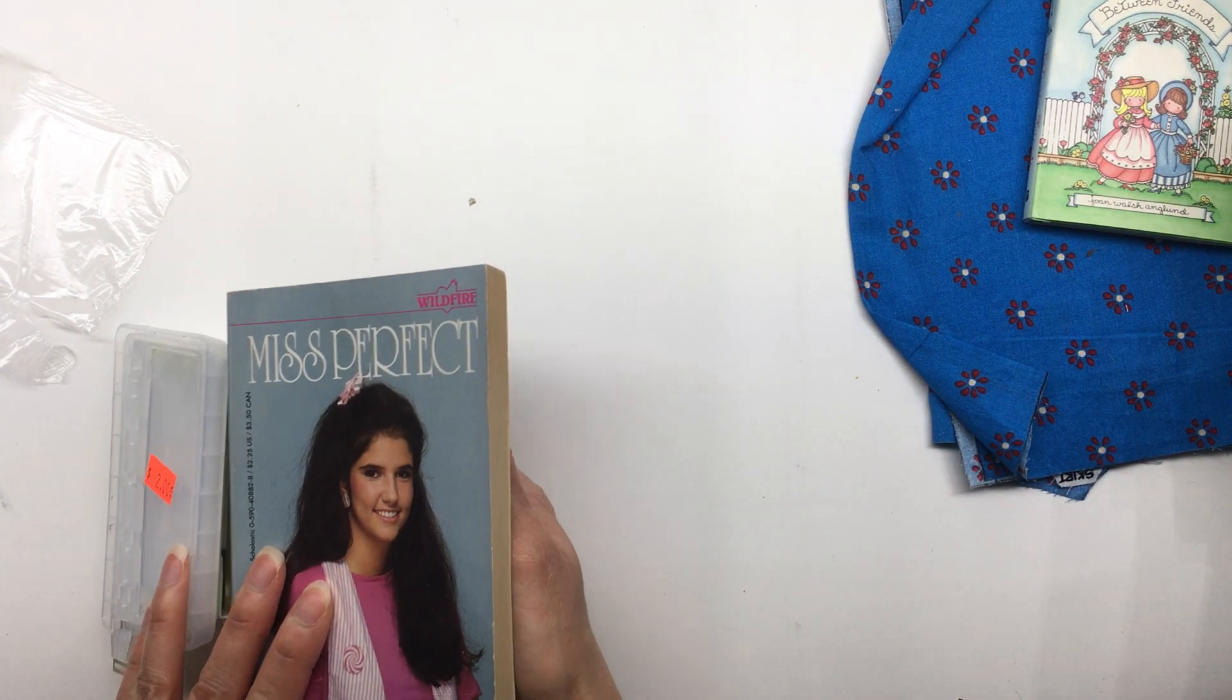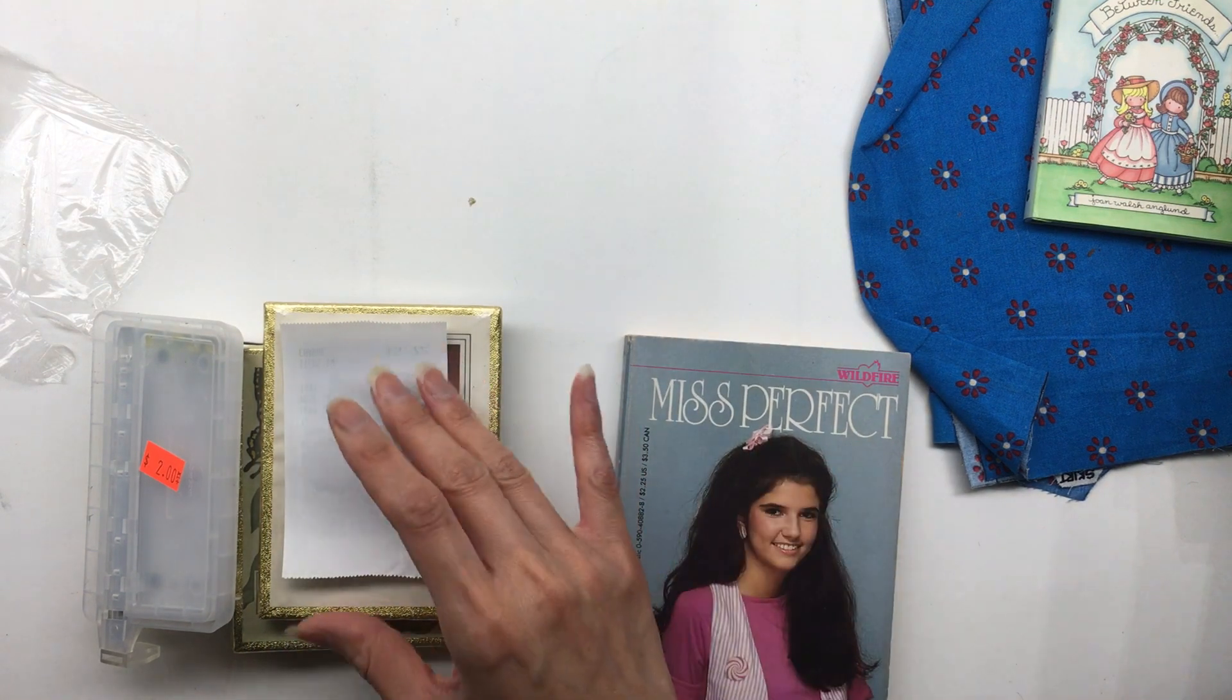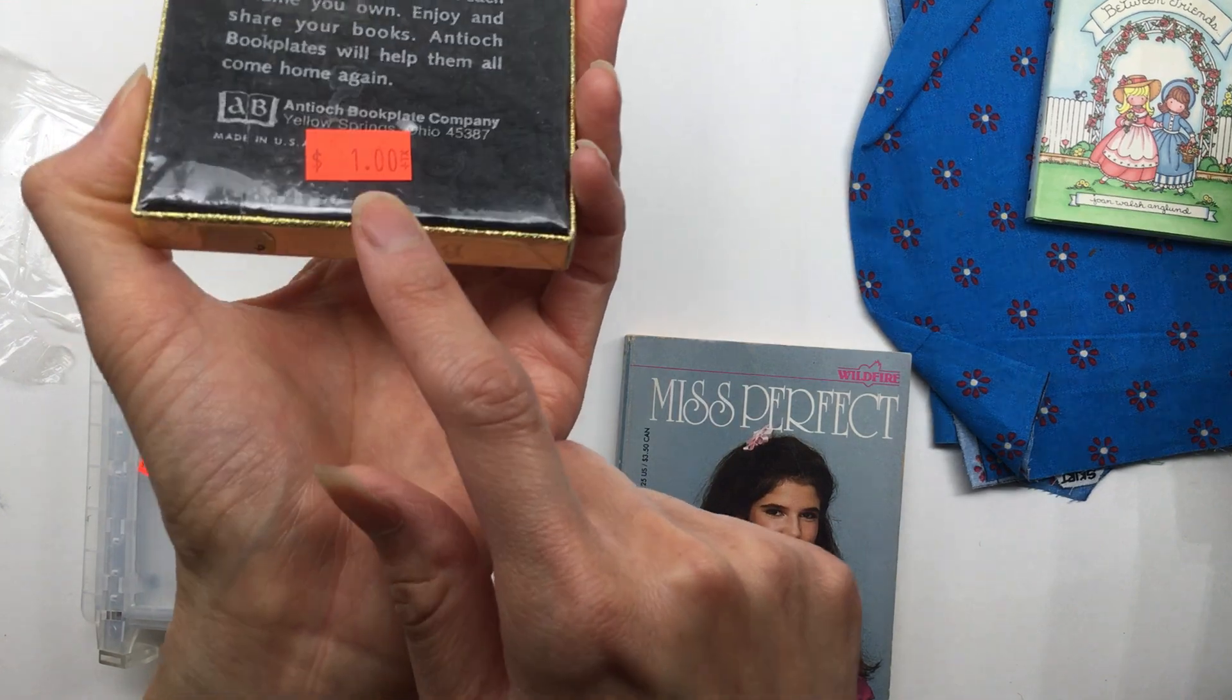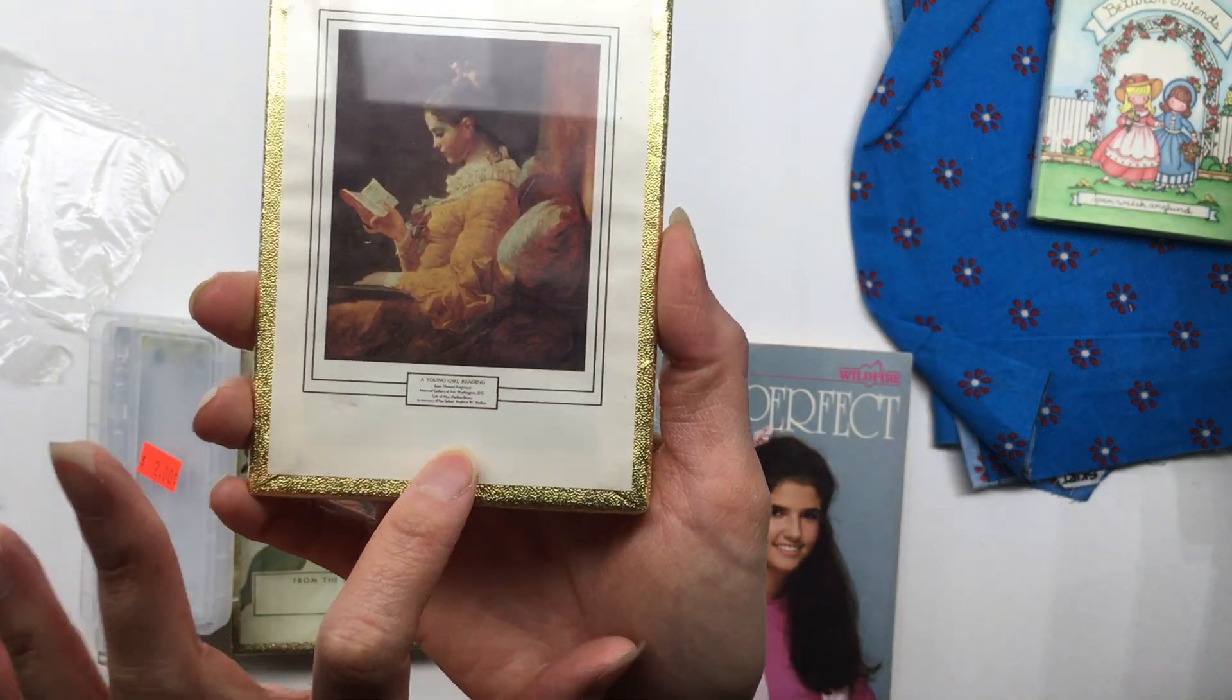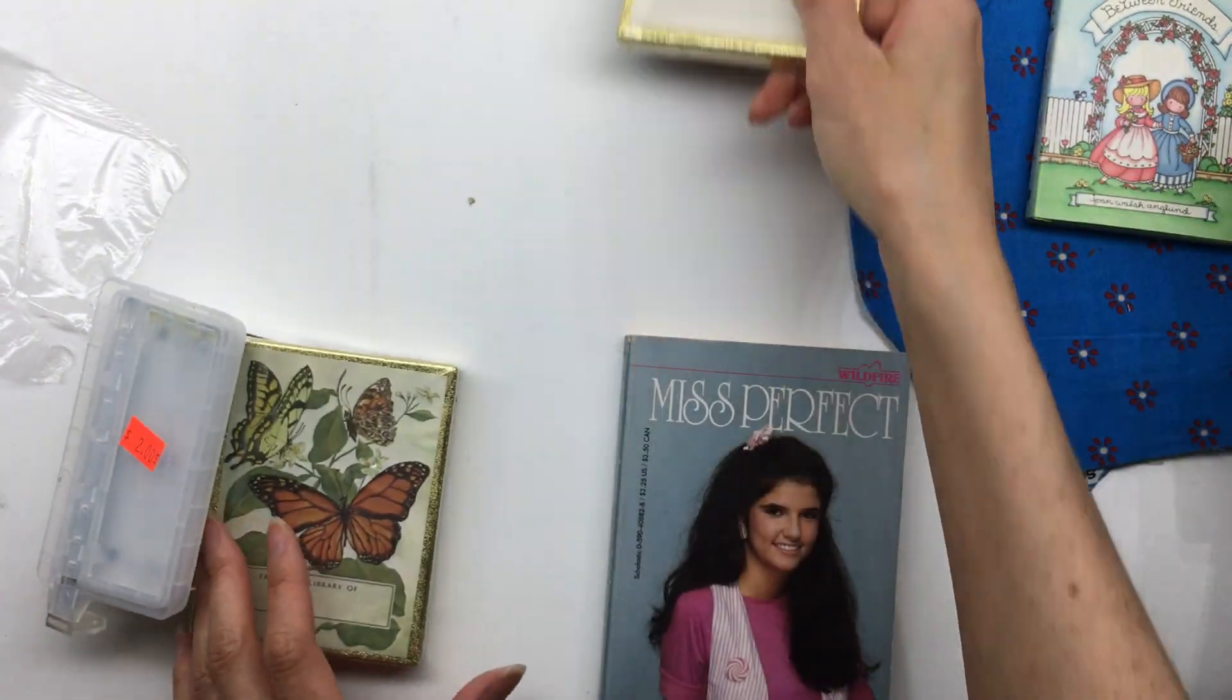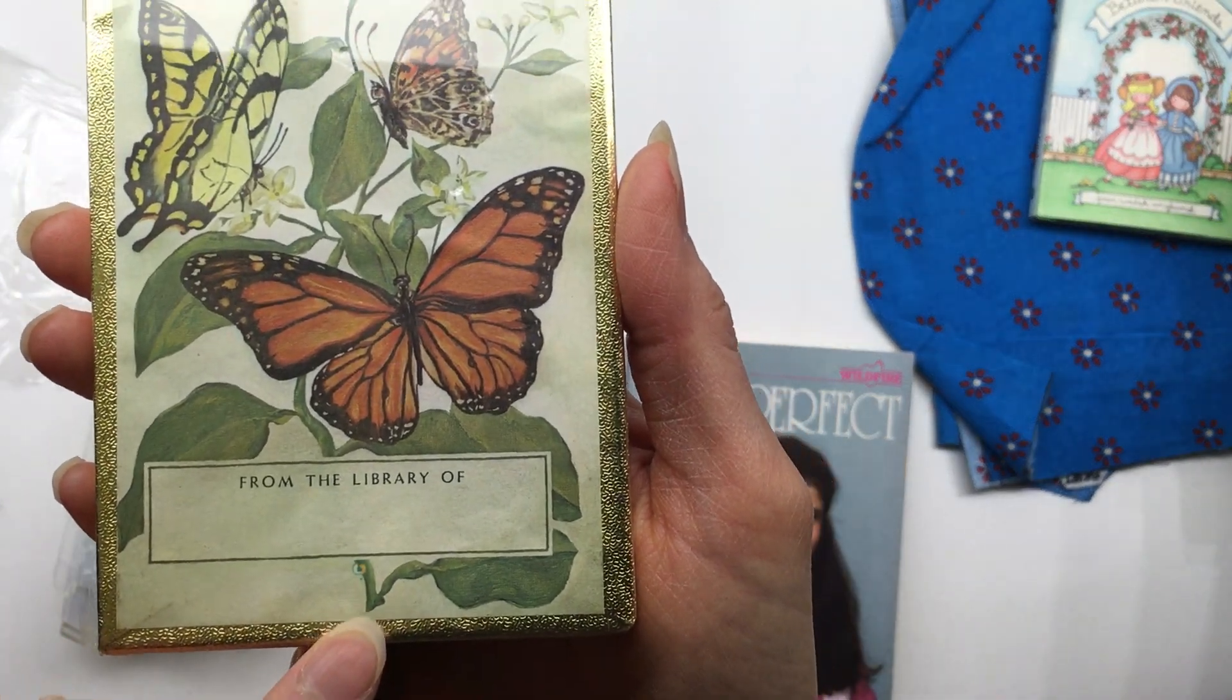And then, so everything at this thrift store was 25% off. So this was a dollar and it ended up being 75 cents. They're book plates. And here's another box of book plates with butterflies.